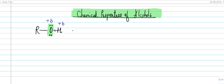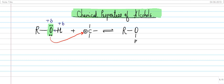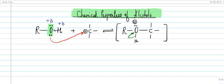For example, when you put any alcohol against a carbocation, the alcohol uses its lone pair and attacks the positive carbon. This results in a structure where oxygen is positive and you have carbon bonded to it. Eventually the oxygen regains its lone pairs and neutralizes itself by pulling these two electrons, so H+ is separated and oxygen gains back its electrons.